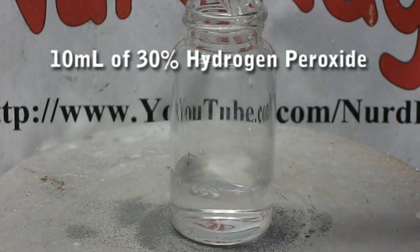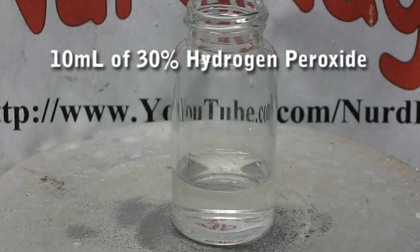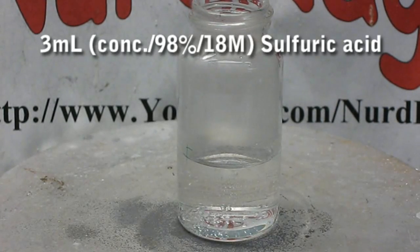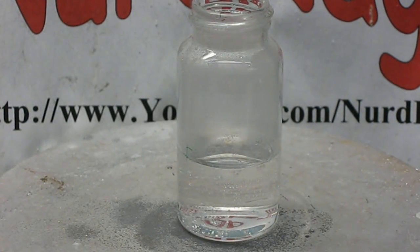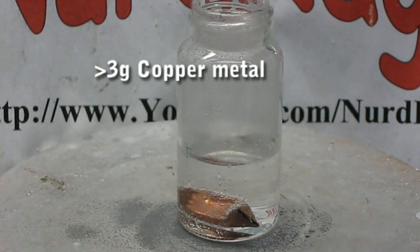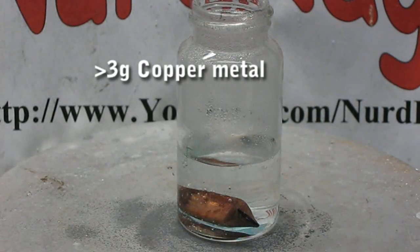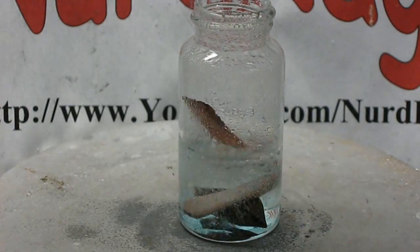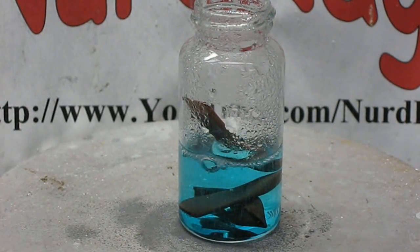In the first method, get a solution of 10 mL of 30% hydrogen peroxide and add 3 mL of concentrated sulfuric acid. It's going to heat up a lot so be very careful. Now drop in 3 grams or so of copper metal. This can be obtained from pipes or wires. The copper metal will dissolve to form copper sulfate.